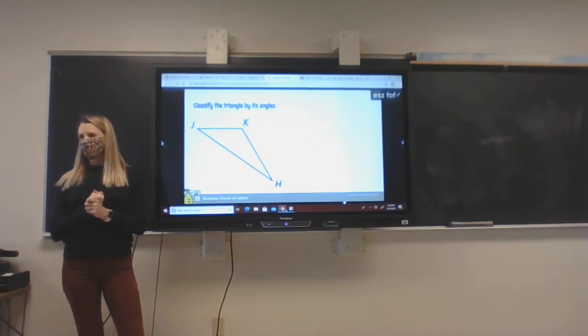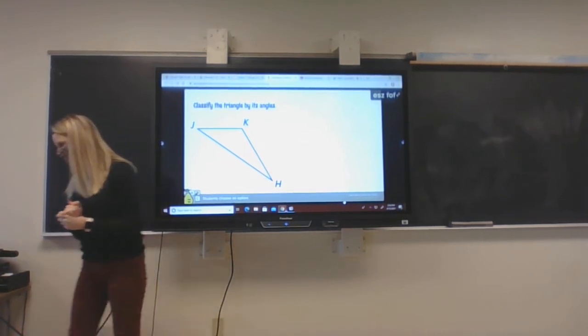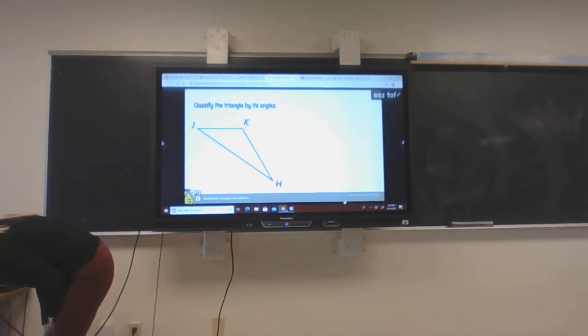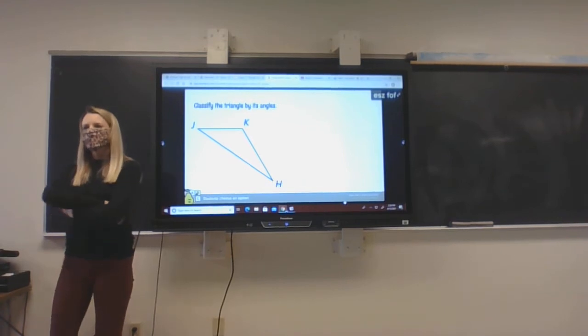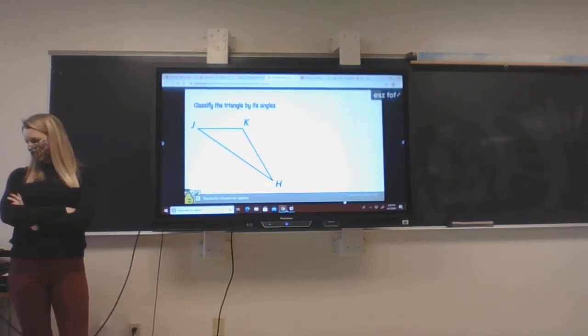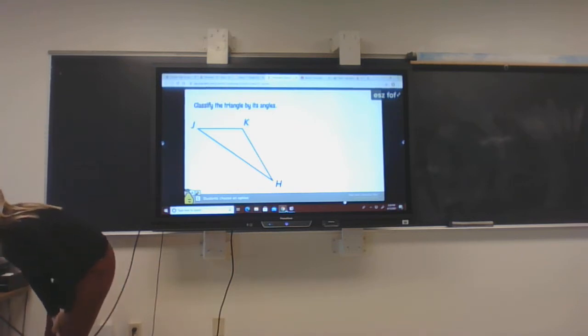Anybody want to provide an answer? Obtuse. Okay, Alex H says obtuse. What about my people at home? Do you agree with Alex H? He said it's an obtuse triangle. Anybody at home want to agree with Alex H? He said obtuse or disagree. Alex W disagrees. Alex W, what do you think it is? I choose acute. He thinks it's an acute.